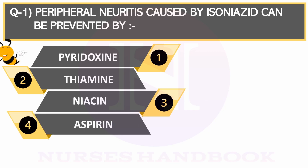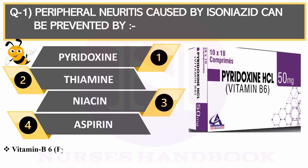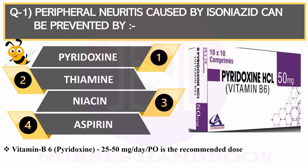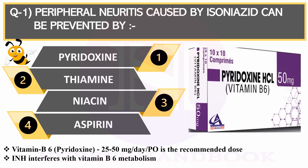The correct answer is Pyridoxine, which is also known as vitamin B6. It is given along with tablet isoniazid to prevent neuritis or peripheral neuropathy, and the recommended dose is 25–50 mg per day per oral. Isoniazid causes interference with vitamin B6 metabolism, which leads to deficiency of this micronutrient and results in peripheral neuropathy.